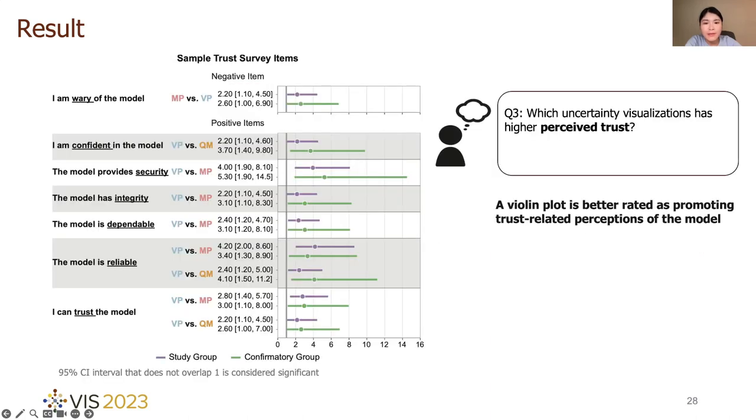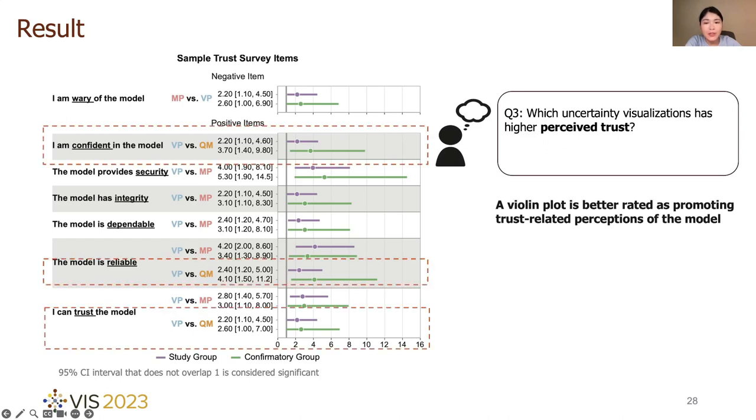Based on trust survey, violin plot seems to be better rated by participants as promoting trust-related perceptions of the model compared with the question mark, like the measures of confident, reliable, and trust.